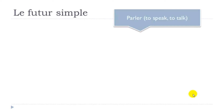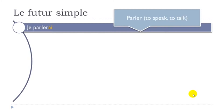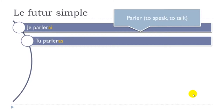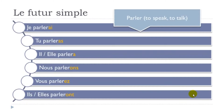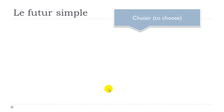Let's see how it works with 'parler', to speak, to talk: je parlerai, tu parleras, il parlera, elle parlera, nous parlerons, vous parlerez, ils parleront, elles parleront. As I said, just keep your basic form and put your endings: AI, A, A, ONS, EZ, ONT.